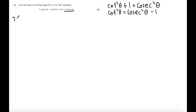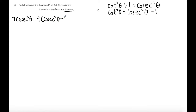Remember to show the substitution — don't just expand it straight away, because there's a method mark for correctly demonstrating your substitution. So we get 7cosec²θ - 4(cosec²θ - 1) = 16 + 5cosecθ.